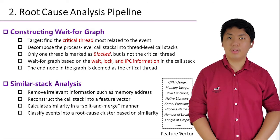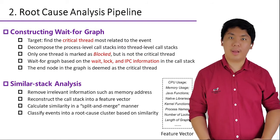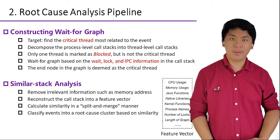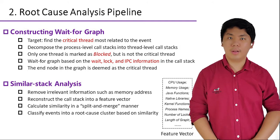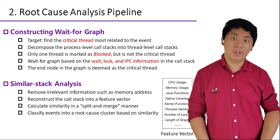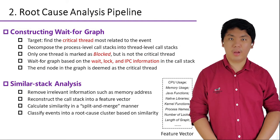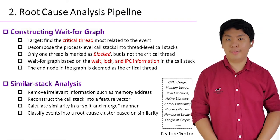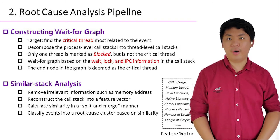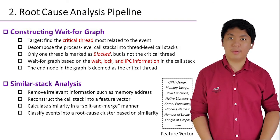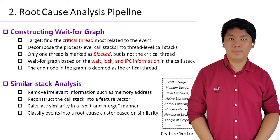Specifically, to uncover the root causes of an ANR or SNR, a main target is to locate the critical thread most related to the event. To this end, we decompose process-level core stacks into thread-level core stacks. When a timeout event occurs, Android marks a thread as blocked to assist analysis. However, this blocked thread is usually not the critical thread we seek, because the blocking might in fact be caused by other threads of the process or even threads of system services due to IPC. Therefore, we construct a wait-for graph based on the wait log and IPC information in the core stack to exploit blocking relationships among threads. Finally, we deem the end node in the graph as our desired critical thread.